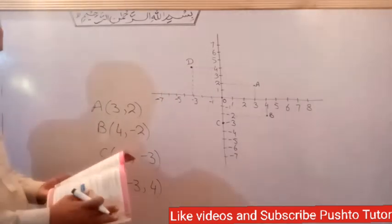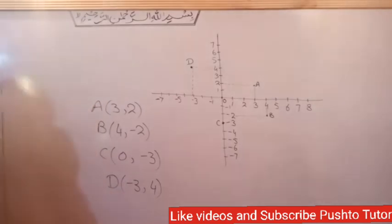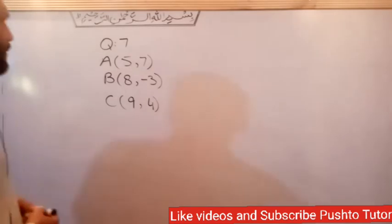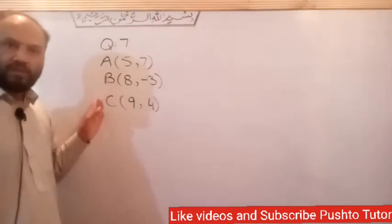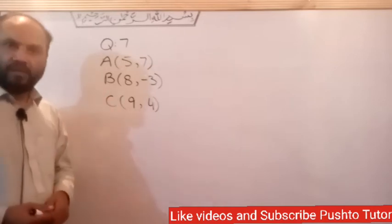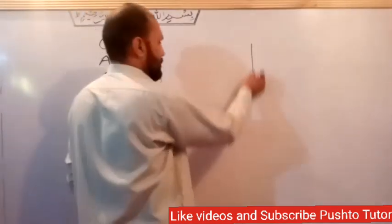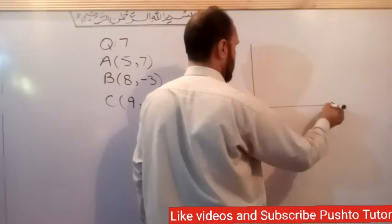Now we move to question number 7. In question number 7, three points are given. We plot them on the graph, join them, and form a triangle. First, we draw the x-axis and y-axis on the graph.